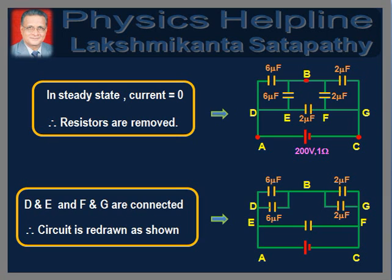In steady state, current in the circuit is zero because every loop contains one or more capacitors. Therefore, there is no potential drop across the resistors. Hence, we remove them from the network as shown in the first figure. Now, points D and E are connected. Therefore, the two 6 microfarad capacitors are connected in parallel between the points D and B. Similarly, the two 2 microfarad capacitors are connected in parallel between the points B and G. Hence, the circuit simplifies as shown in the second figure.